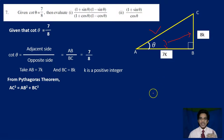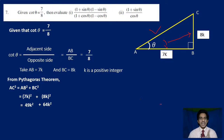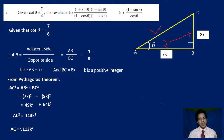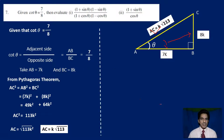Let us find the value of the hypotenuse using the Pythagoras theorem. Hypotenuse squared equals side squared plus side squared, which means AC squared equals AB squared plus BC squared. AB is 7K, so this becomes 7K whole squared plus 8K whole squared, giving 49K squared plus 64K squared, which equals 113K squared. Therefore AC equals the square root of 113K squared, which simplifies to K times square root of 113.